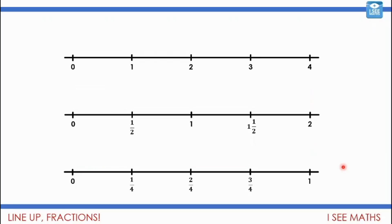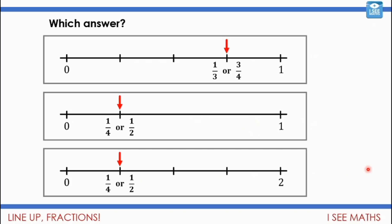So let's look at those different number lines. We go 1, 2, 3, 4. A half is halfway between one, and halfway between one and two is one and a half. And then we've got this number line going up in quarters. How about this question — which answer is correct? Notice the last one isn't a zero to one but a zero to two number line. Pause the video and have a go at this one.